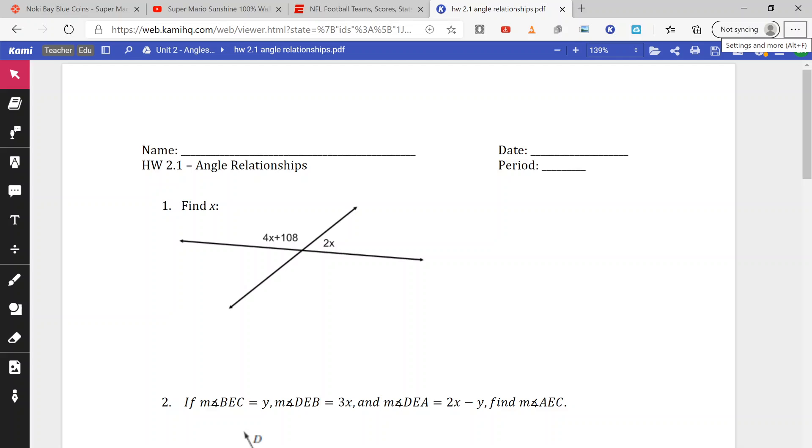We learned that adjacent angles are pretty much angles side by side and we can use the given diagrams to set up an equation and solve for missing variables or finding the missing angles.